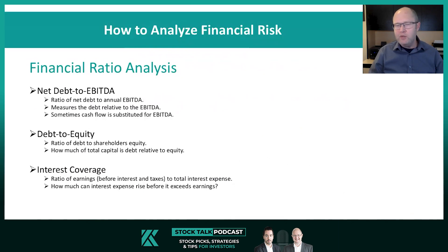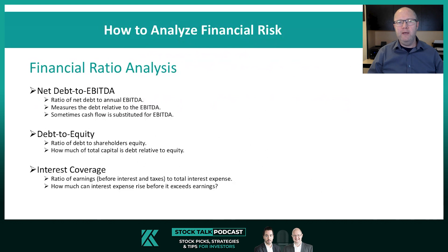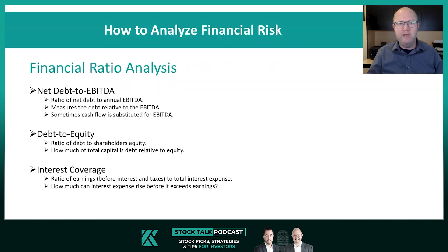Most companies at least have some debt, and that's okay. In a lot of industries it's absolutely necessary. A reasonable amount of debt is okay. But what is a reasonable amount of debt and how do you evaluate that? One way to analyze financial risk is to do financial ratio analysis. There are three ratios that are particularly popular when it comes to analyzing financial risk. One, which we use quite frequently, is the net debt to EBITDA ratio — EBITDA being earnings before interest, taxes, depreciation, and amortization. It's a form of operating income.